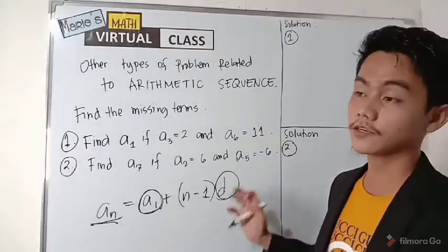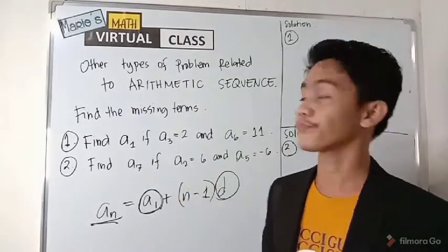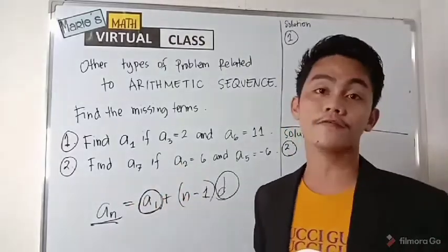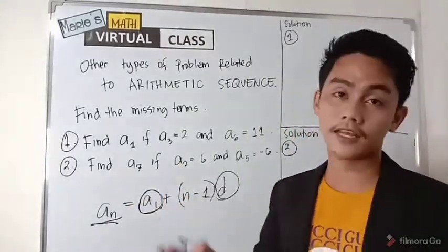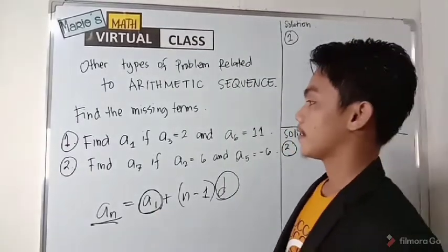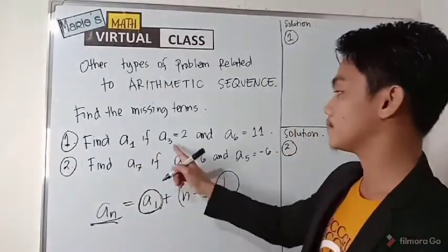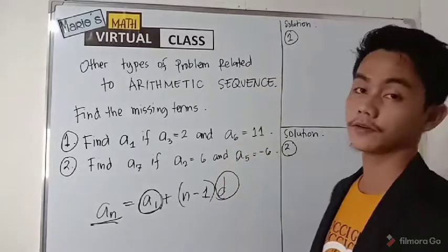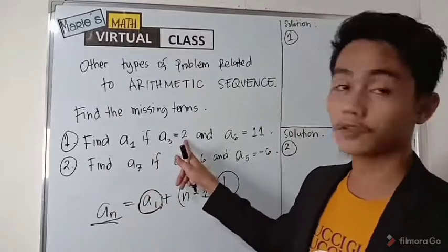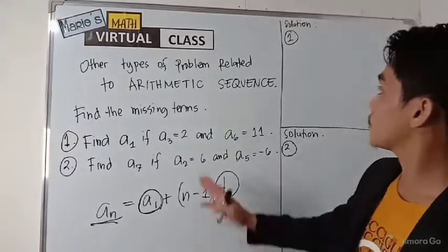These are the things you need to know to solve any missing term. In this type of problem it seems like there is not enough information given, but these problems can also be solved using this formula. Number one: find a sub one if a sub three equals two and a sub six equals eleven. In other words, the first term is missing; the third term is two and the sixth term is eleven.